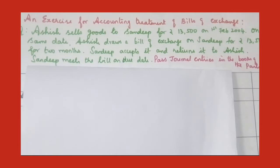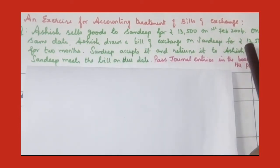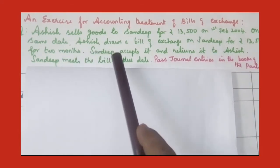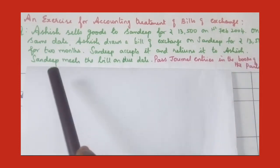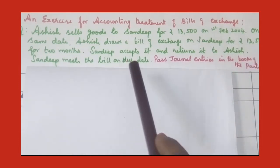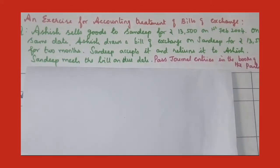Here they have given: Ashish sells goods to Sandeep for Rs. 13,500 on 1st February 2014. On the same date, Ashish draws a bill of exchange on Sandeep for Rs. 13,500 for 2 months. Sandeep accepts it and returns it to Ashish. Sandeep meets the bill on due date. Pass journal entries in the books of both the parties.